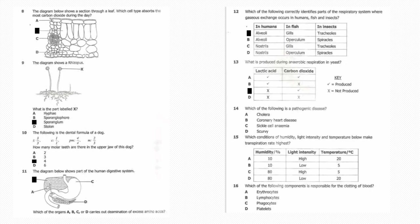Fifteen: Which condition of humidity, light intensity, and temperature below makes transpiration rate highest? The answer is A, humidity at 10%, light intensity should be high, and the temperature should be 20 degrees. Sixteen: Which of the following components is responsible for the clotting of blood? The answer is D, platelets.